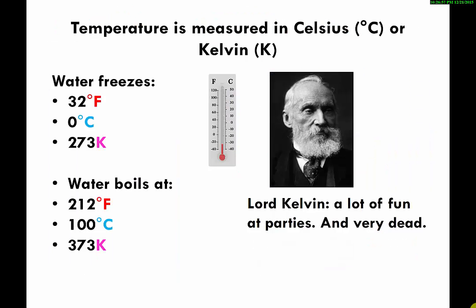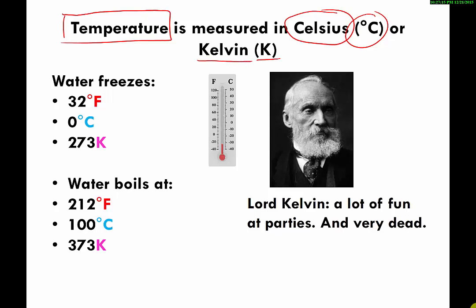Temperature — the informal definition is how hot or cold certain things are. The metric system uses degrees Celsius for measuring temperature, while the SI system uses kelvin, abbreviated with a capital K and no degree symbol. Water freezes at 32 degrees Fahrenheit, which is the same as zero degrees Celsius — those two numbers are just two different ways of saying the same thing.